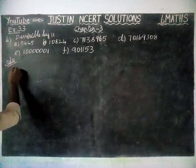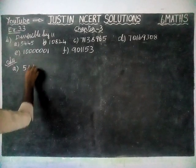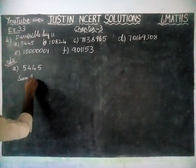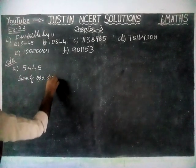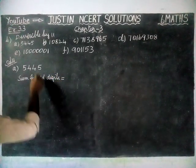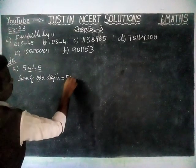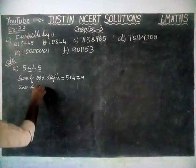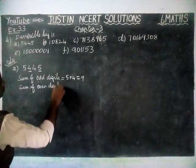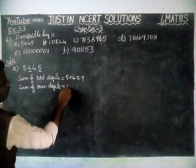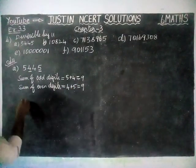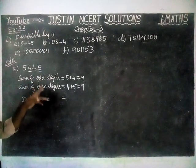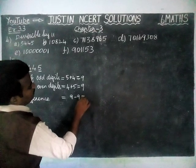Now we are going to check it. Option A: the given number is 5445. First, we are going to find the sum of its odd digits. Sum of odd digits is equal to 5 plus 4, which is equal to 9. Next, sum of even digits is equal to 4 plus 5, which is equal to 9. The difference between the sum of odd digits and even digits is 9 minus 9, which is equal to 0.